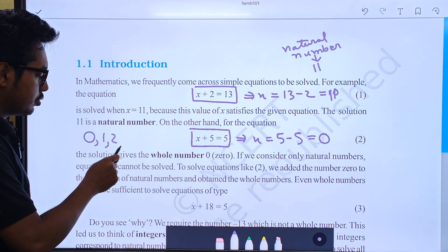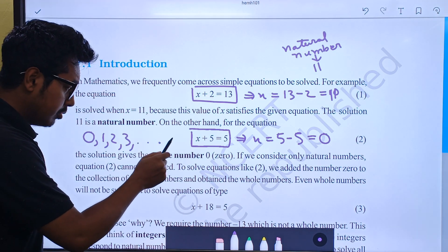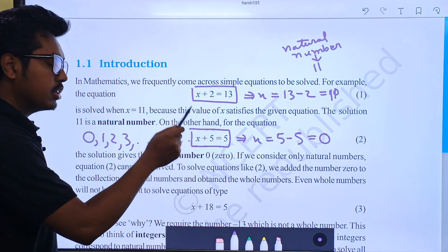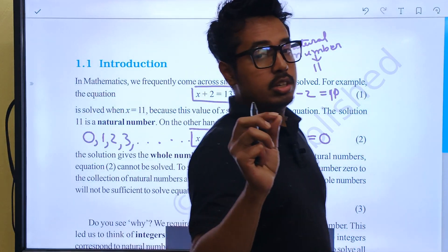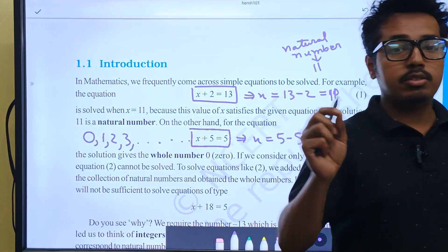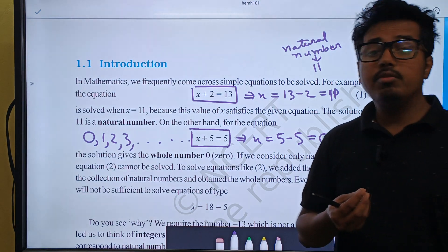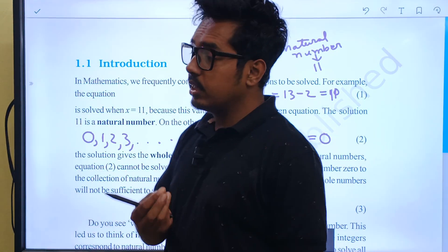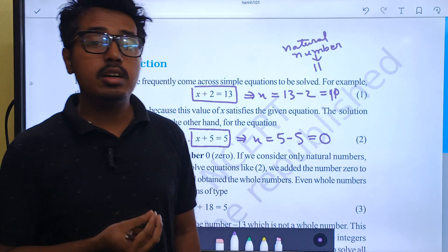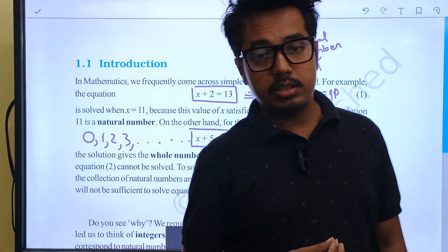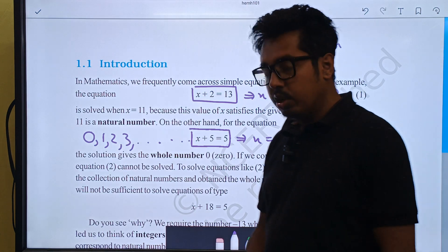The smallest whole number is 0, then 1, 2, 3. The number of natural numbers keeps going — we cannot calculate the total number of natural numbers, and similarly we cannot calculate the total number of whole numbers. But the smallest whole number is 0.